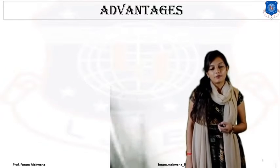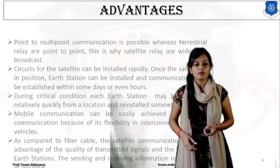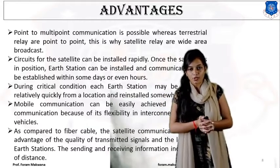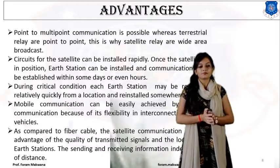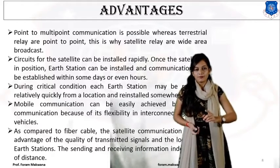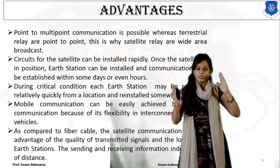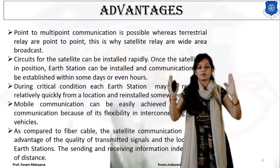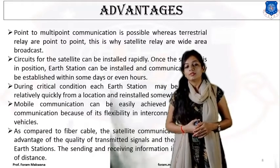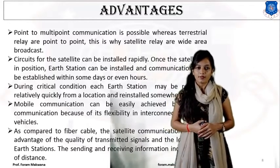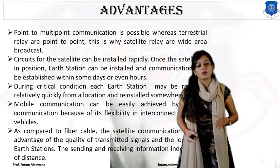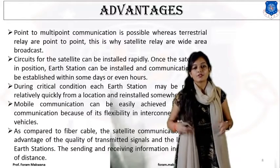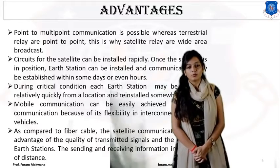What are the advantages? First, for satellite communication, it allows point-to-multipoint communication. For microwave communication, it requires a line of sight — that means point-to-point communication where your transmitter and receiver should be in one line. To overcome this disadvantage, we implement the satellite, which allows point-to-multipoint. A basic example is broadcasting: the transmitter is one and receivers are multiple. So satellite communication allows point-to-multipoint communication.